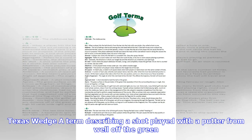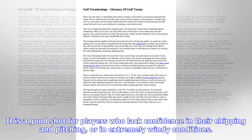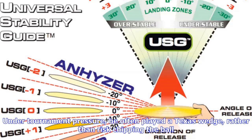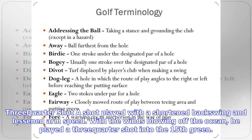Scoring clubs: the driver, putter and sand wedge. He devoted much of his practice to the scoring clubs. Scramble: to recover from trouble — Seve Ballesteros could scramble with the best of them — or a popular form of team play in which the team members pick the ball in the best position and everyone plays from that spot. The member guest was played in a scramble format.